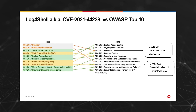Besides these two initial risk categories, once the CVE is disclosed, Log4Shell makes its way into the Vulnerable and Outdated Components risk category.